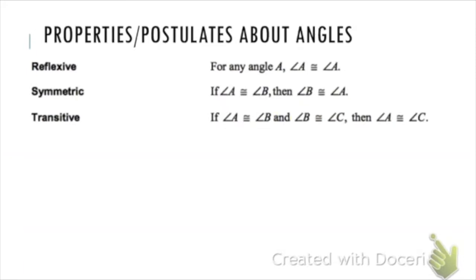Now let's look at some properties and postulates about angles. Reflexive, symmetric, and transitive hold true not only for line segments but for angles. The reflexive property says an angle equals itself. The symmetric property says if angle A is congruent to angle B, then angle B is congruent to angle A. The transitive property — put a star by this one — says two angles equal to the same angle must equal each other.